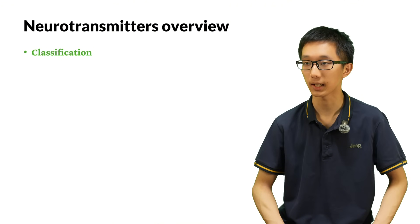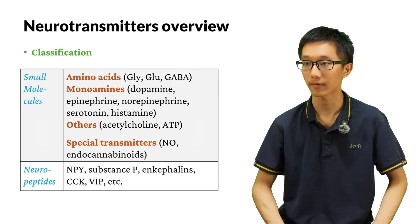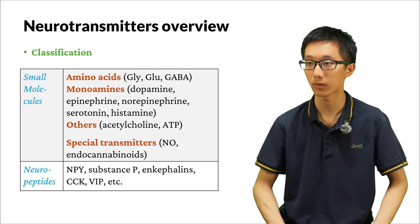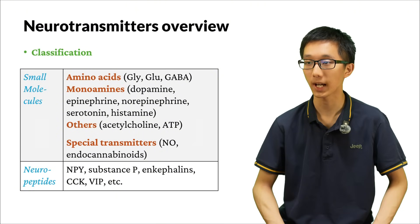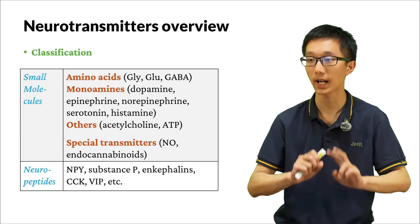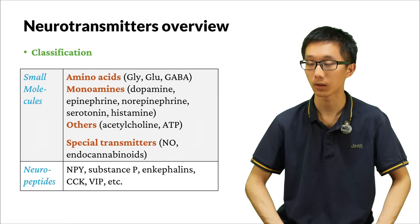Neurotransmitters can be classified in different ways. Firstly, we can classify them into small molecules and neuropeptides. Small molecule neurotransmitters have many different subtypes. For example, amino acids — chemicals that have both the amino group and the carboxyl group, and therefore have both amino and acid properties. These include glycine, glutamine, and GABA. Glycine and glutamine are two of the 20 amino acids used to make proteins, while GABA is not.